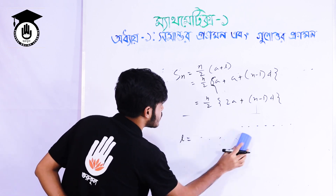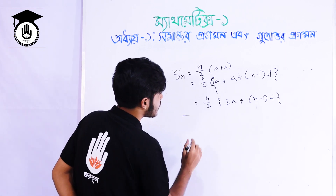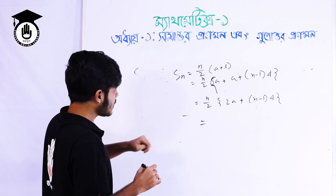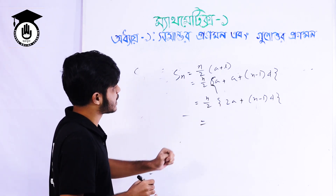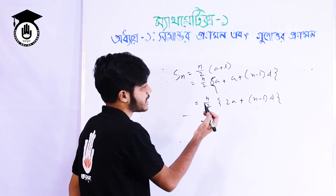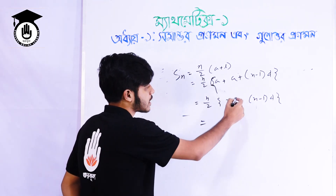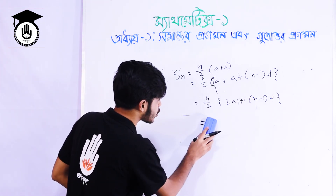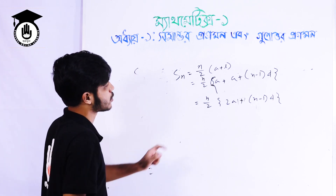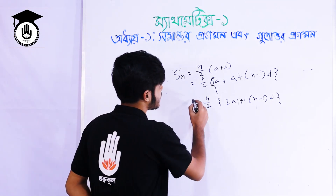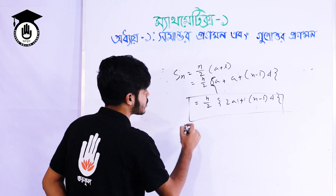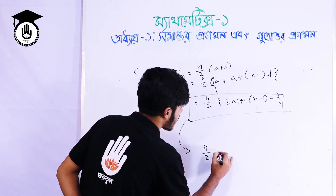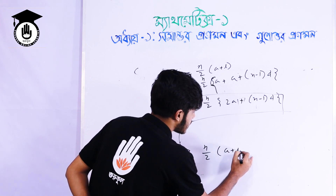I'll show you the result. We will cut a 2, and we will cut a 2, because we will cut a plus. We will cut a 2 — that means this is the root formula. So the result is n by 2 into a plus L.